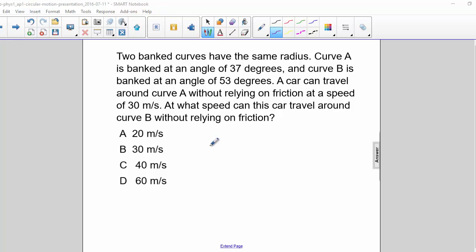Two banked curves have the same radius. Curve A is banked at an angle of 37 degrees and curve B is banked at an angle of 53 degrees. A car can travel around curve A without relying on friction at a speed of 30 meters per second. At what speed can this car travel around curve B without relying on friction?